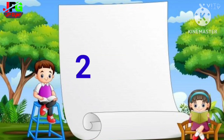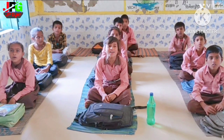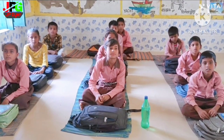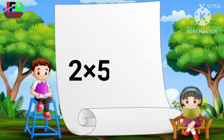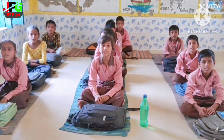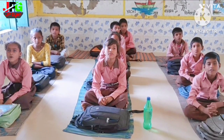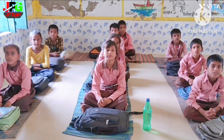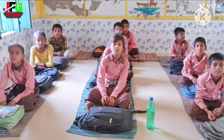2 1s are 2, 2 2s are 4, 2 3s are 6, 2 4s are 8, 2 5s are 10, 2 6s are 12, 2 7s are 14, 2 8s are 16, 2 9s are 18.